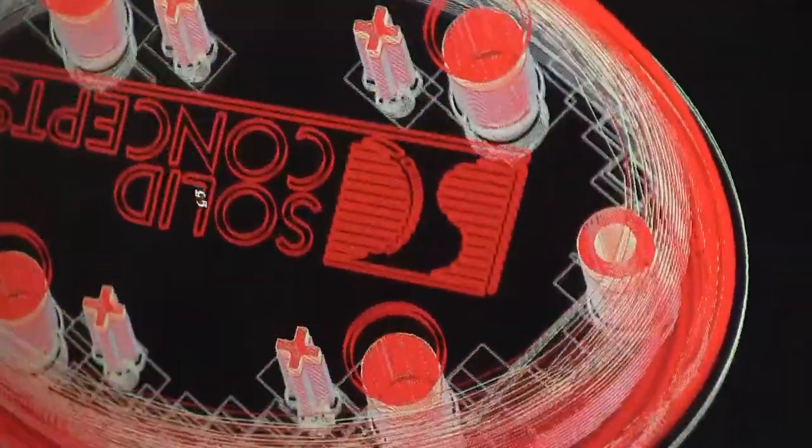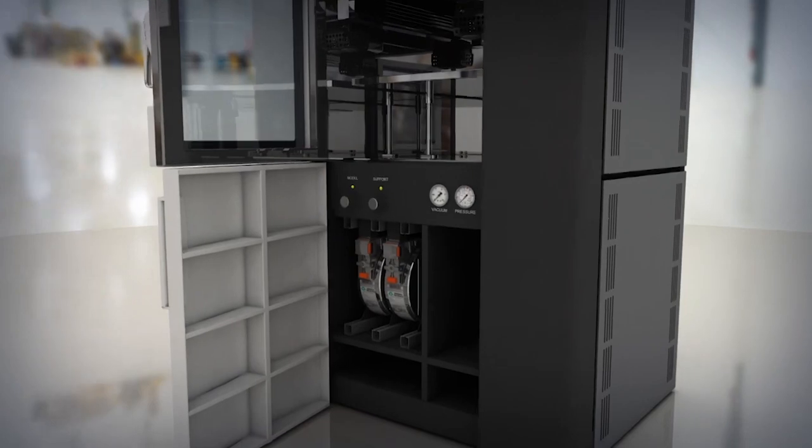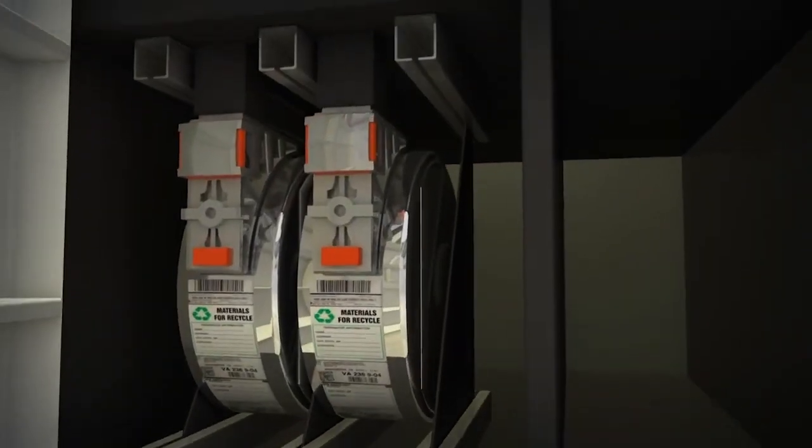The FDM process begins by slicing 3D CAD data into layers. The data is then transferred to a machine which constructs the part layer by layer upon a build platform.